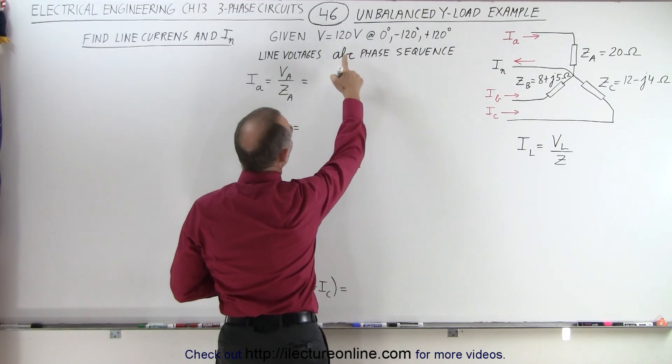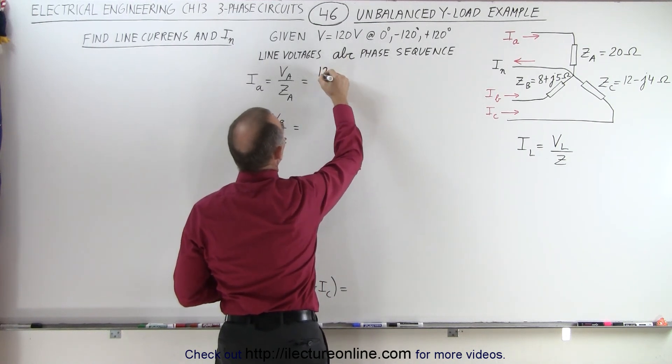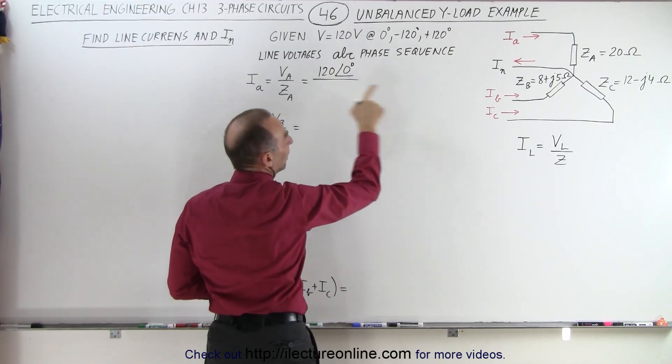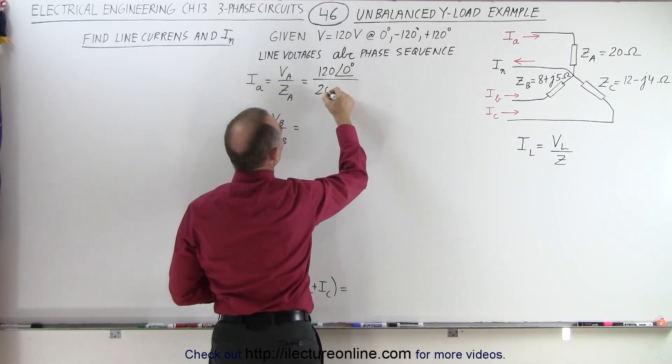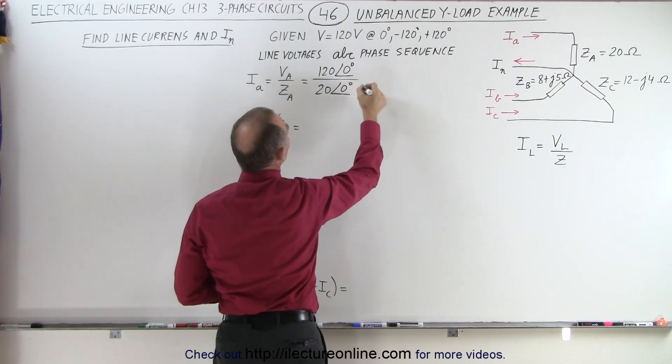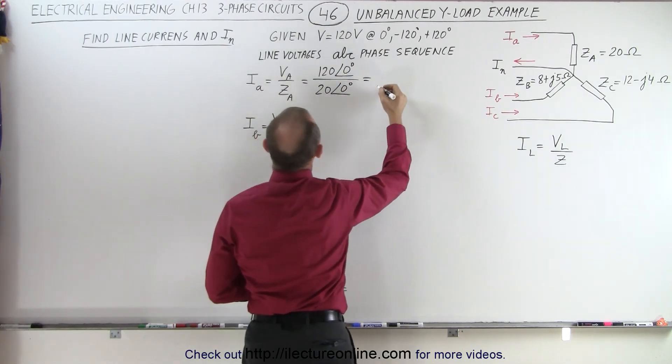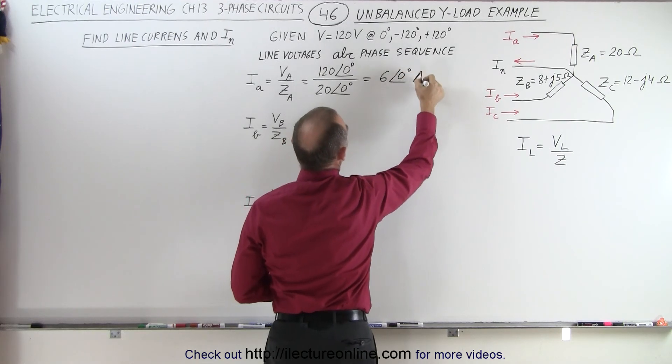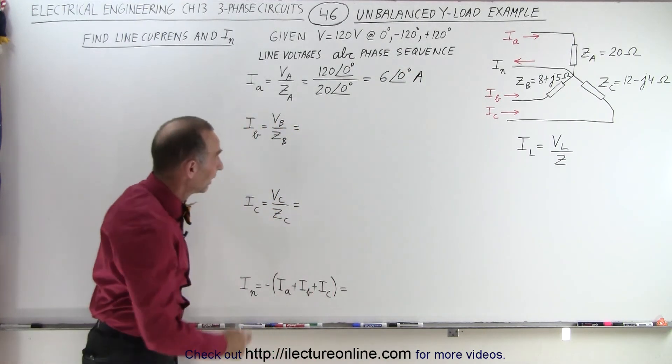We're given that the voltage is 120 volts, so we have 120 with a phase angle of zero for the line voltage A, divided by impedance of 20 ohms, that's 20 also with a phase angle of zero, and so therefore that would be equal to a current of 6 amps with a phase angle of zero degrees. That was the easier one. How about the next one?